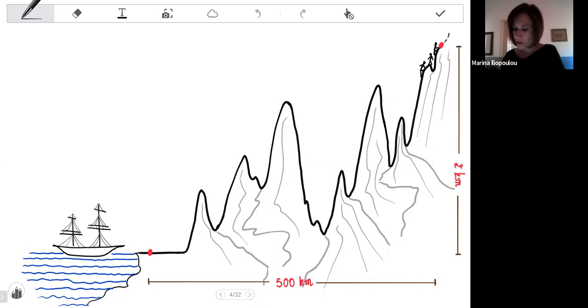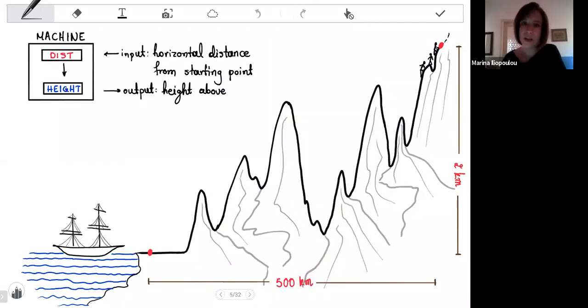Along the way they have logged in all this information into a machine. With this machine you can input any distance you like from the horizontal distance from the starting point and the machine will return to you the height over that distance. For instance, if you input zero, your height is zero at sea level. While if you input 500 kilometers, the machine will return two kilometers.